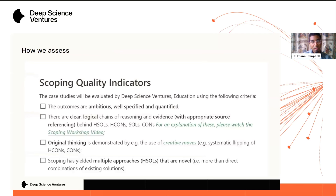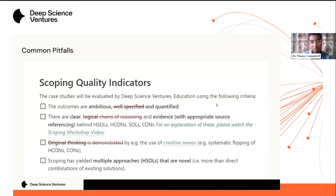For this round of the application process, we are measuring scoping quality through these indicators: we want outcomes to be ambitious, well-specified, and quantified; clear logical chains; original thinking; and multiple approaches. All of this will be in the portal for those going into round two, but it's helpful to keep this in mind when we talk about structures of logic.